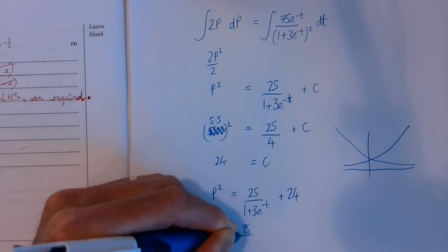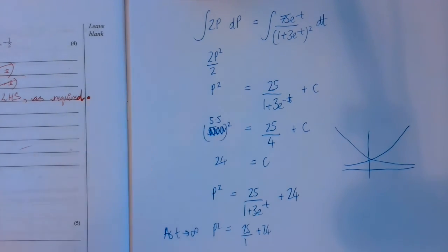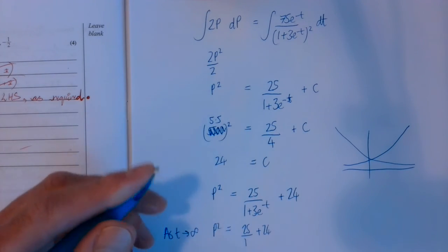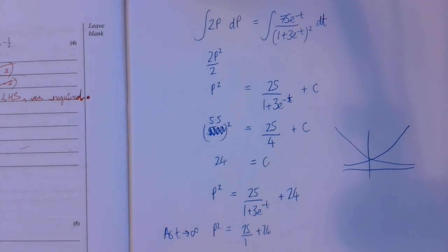p squared tends to 25 over 1 plus 24. So that's p squared. So p would, so that's 49. So p would be 7. So 7,000 is the final answer to that one, 7,000. And that's a big old question. I'm very happy to go through that with you on Monday or Tuesday, if you're still unclear.